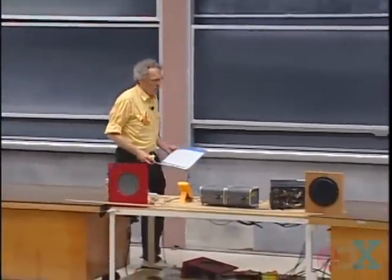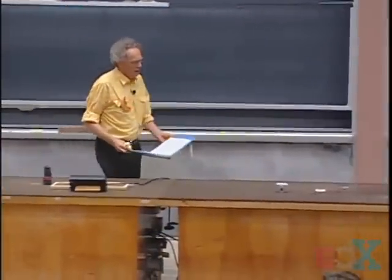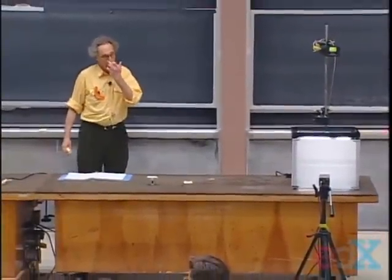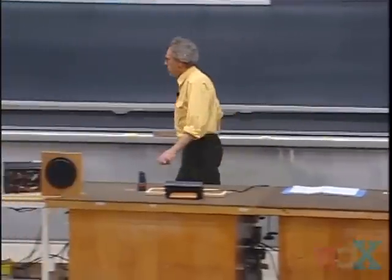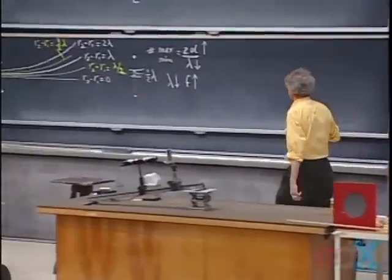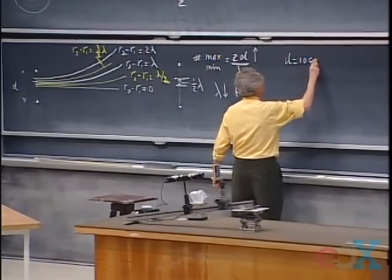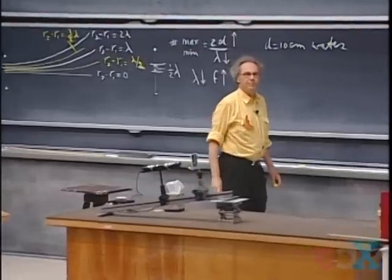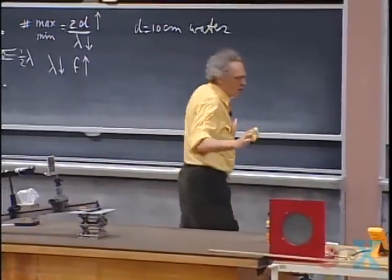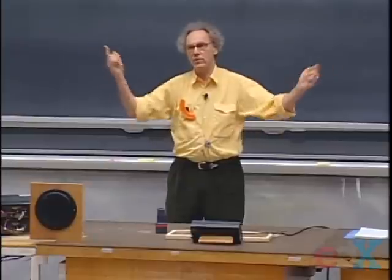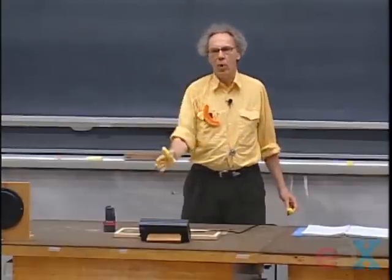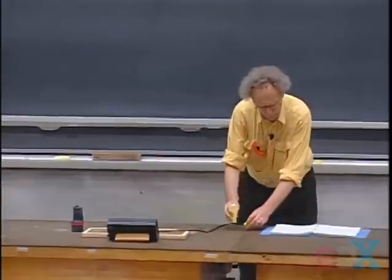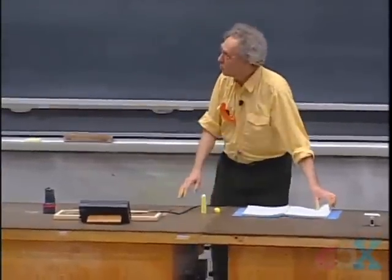Now I'm going to show you these nodal lines with a demonstration using water. We have two sources that tap on the water surface, with separation D equal to ten centimeters. We tap at a frequency of about seven hertz. What you're going to see are very clear nodal lines — this is a two-dimensional surface — where the water doesn't move at all. The mountains and valleys arrive simultaneously, and the water is never moving.